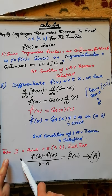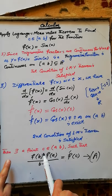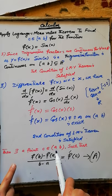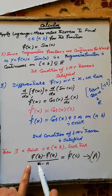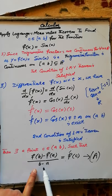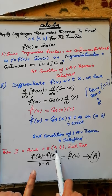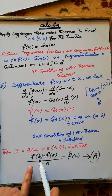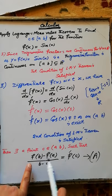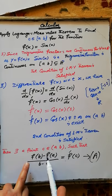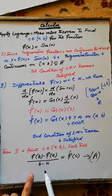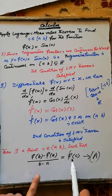Therefore, according to the Lagrange Mean Value Theorem, there exists a point c contained in the open interval (a, b) such that [f(b) - f(a)] / (b - a) = f'(c), where a and b are the endpoints of the given interval, f(a) and f(b) are the values of the function at the endpoints of the given interval, and (b - a) is the length of the interval.